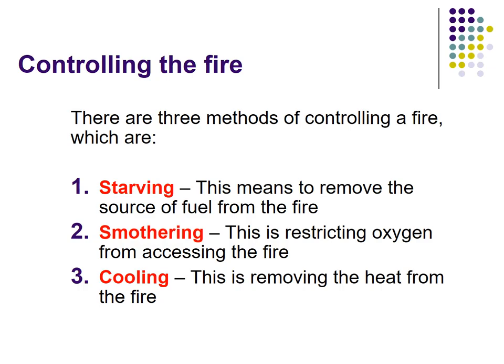Controlling the fire: there are three standard methods of controlling a fire. Starving — this means to remove the source of fuel from the fire. Smothering — this is the restriction of oxygen from accessing the fire. Cooling — this is removing the heat from the fire. To put out the fire, we have to take away one of the elements of fire: whether heat, fuel, or oxygen.